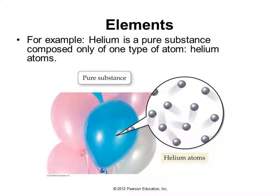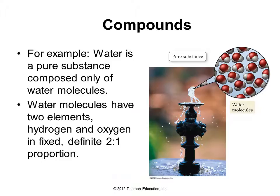Here's an example of an element: helium. It is a pure substance composed of only one type of atom — the helium atom, pictured here. Here's an example of a compound: water. Water is a pure substance composed only of water molecules, but the water molecules have two elements present — hydrogen and oxygen — in a fixed, definite proportion: two hydrogen atoms to one oxygen.